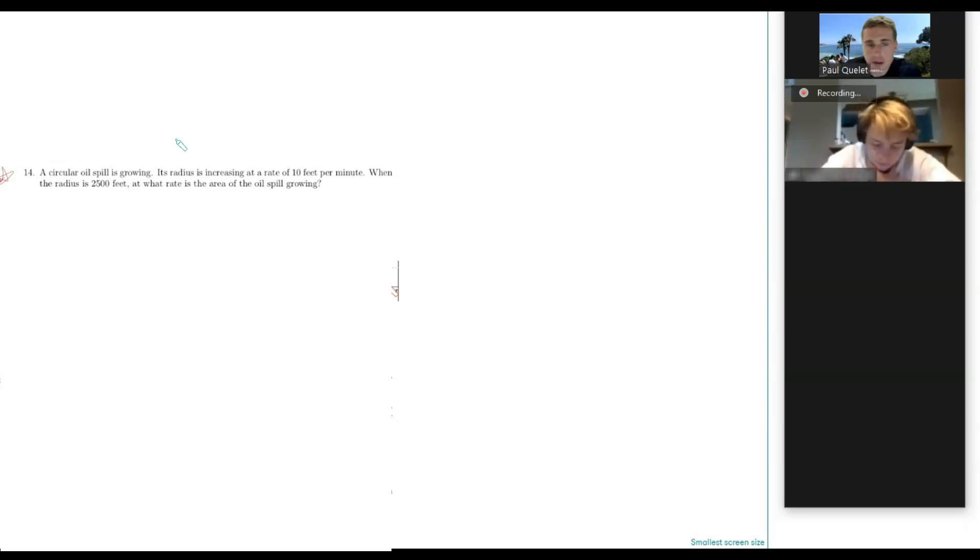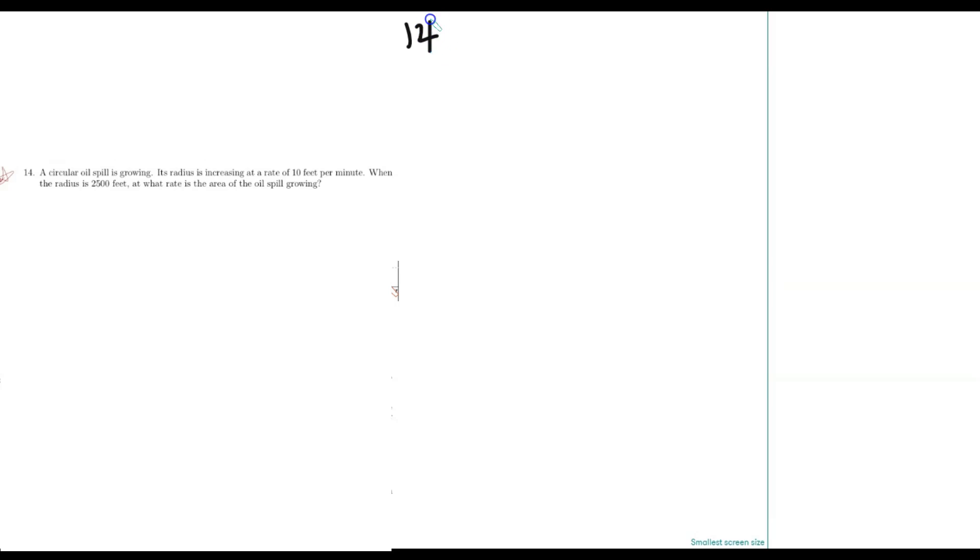I suggest anytime you have something like this, it's a good idea to write down your knowns. So we're working on 14 here. It says a circular oil spill is growing. So it grows. If we don't get grows, we did something wrong.